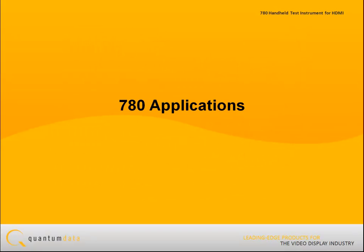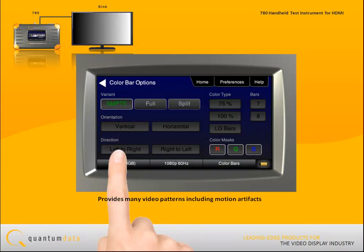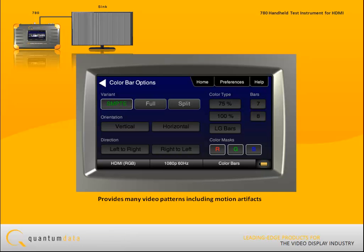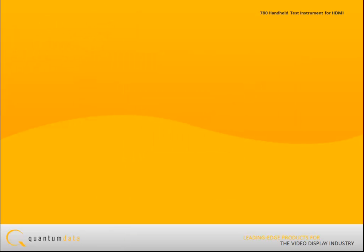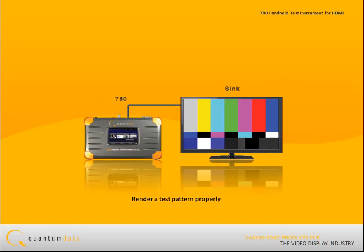There are many applications for the 780 test instrument. For video pattern testing, the 780 provides many video patterns for testing HDTVs, including a scrolling pattern for testing motion artifacts. You can import your own bitmaps as well. With the 780, you can test an HDTV's HDMI and component analog video inputs to ensure that they can render a test pattern properly.